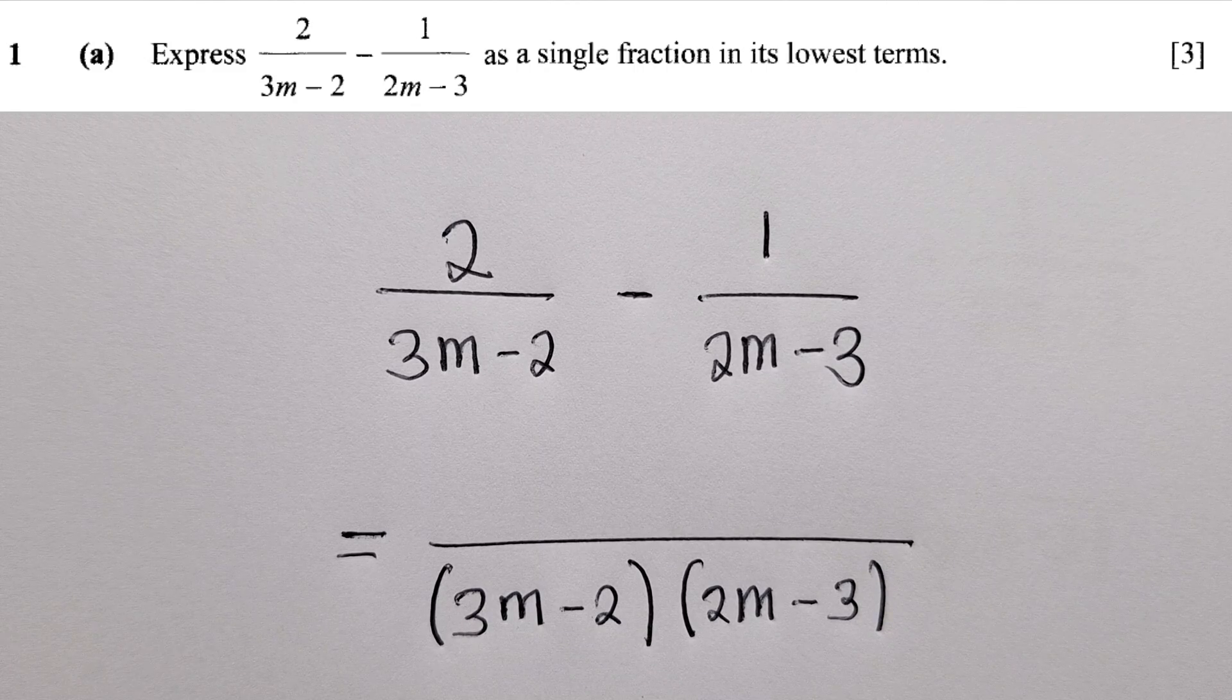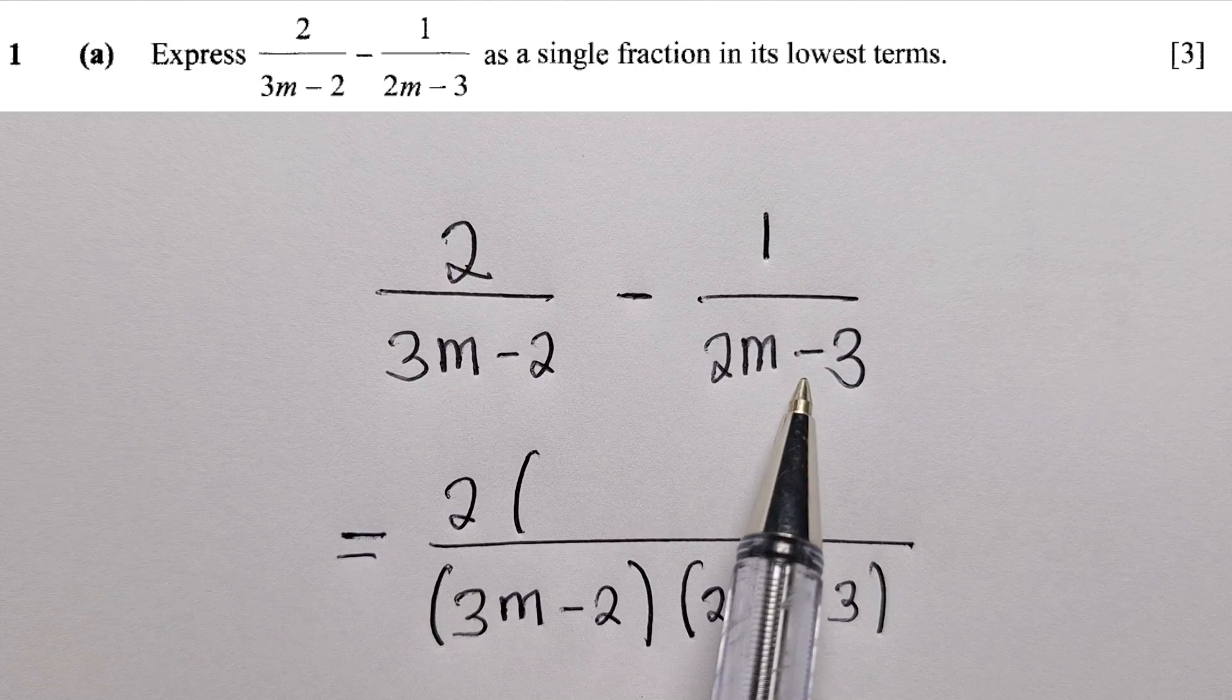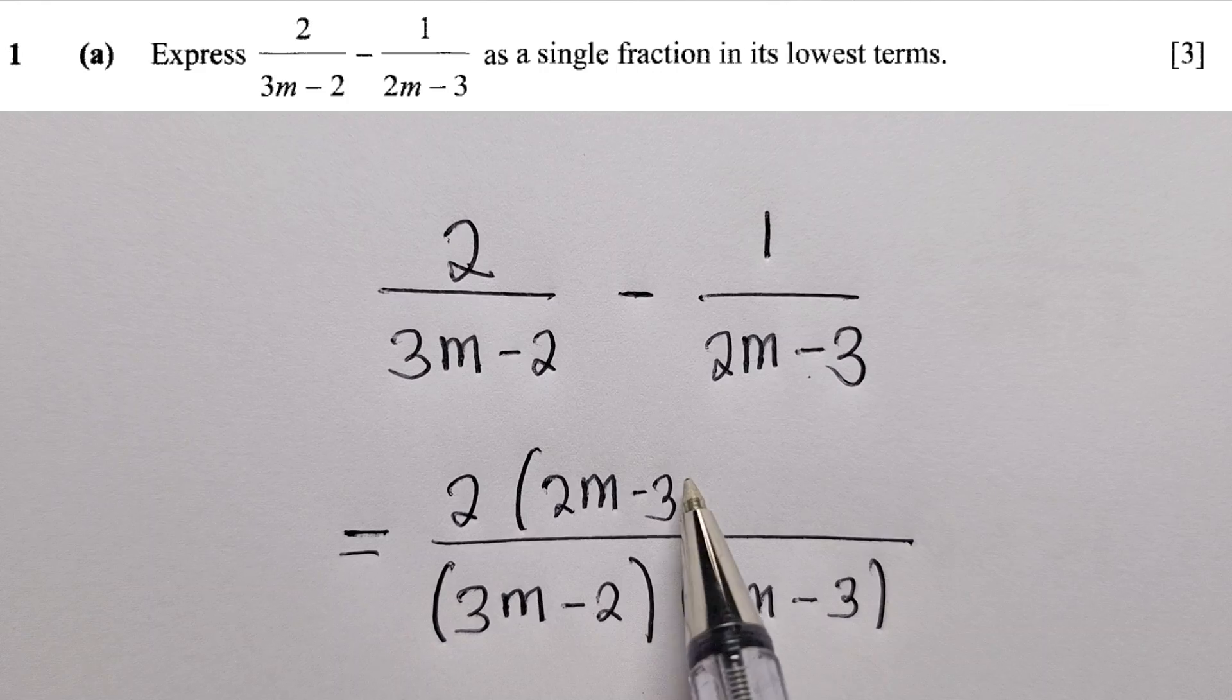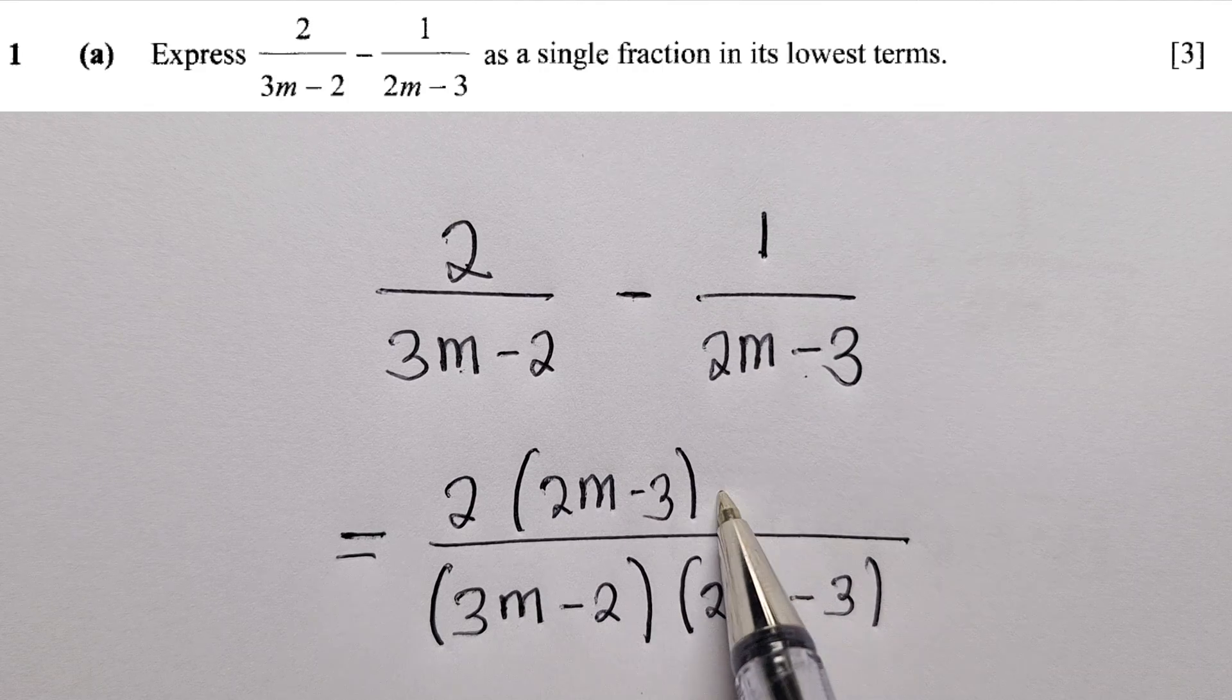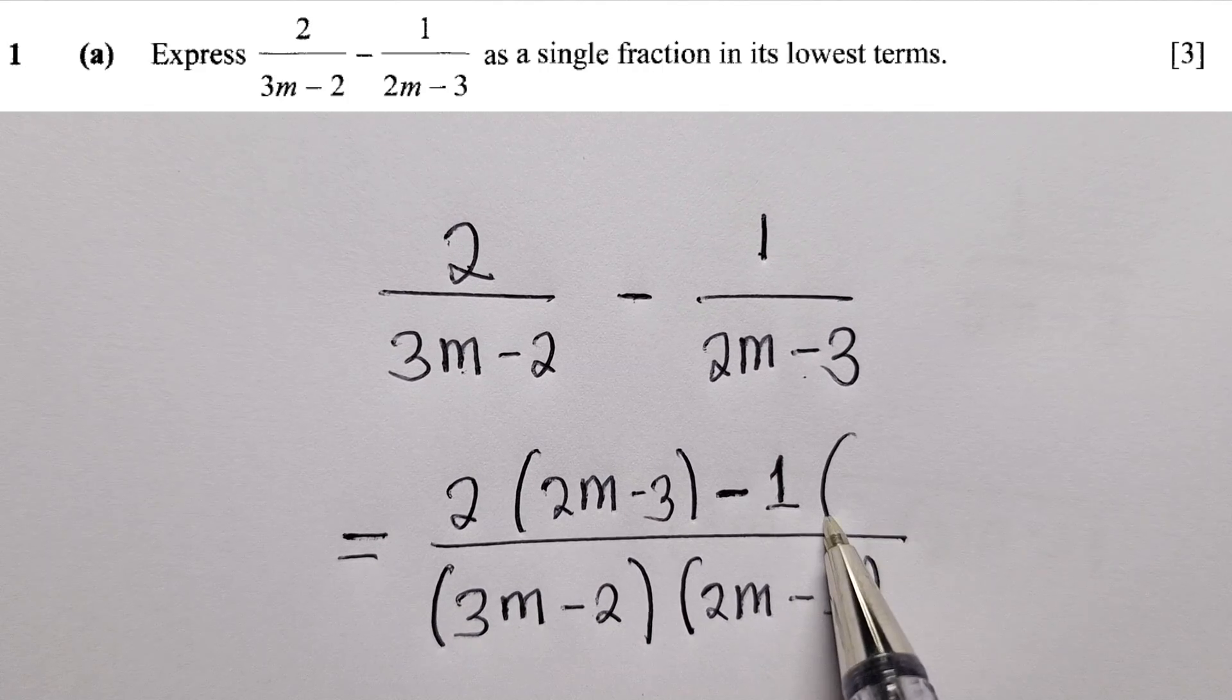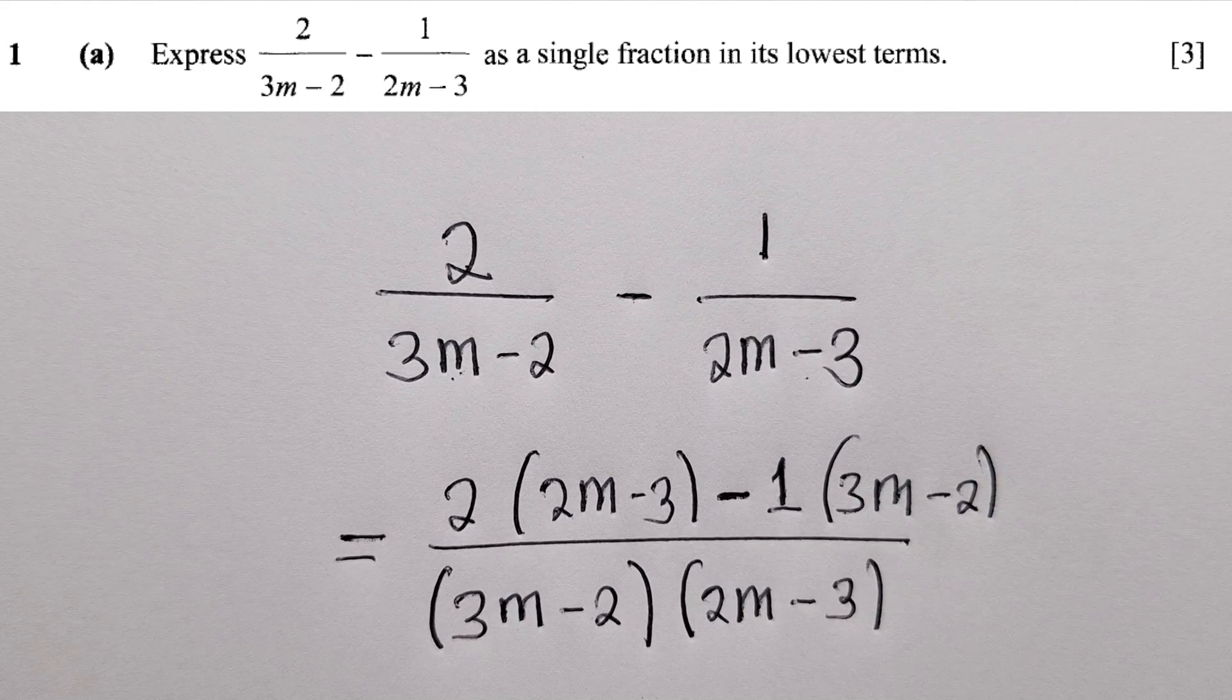This is the lowest common denominator: (3m-2)(2m-3). From here we multiply. This will be multiplied by 2m minus 3. This will also be multiplied by 3m minus 2, but remember there is a minus sign here we have to include.